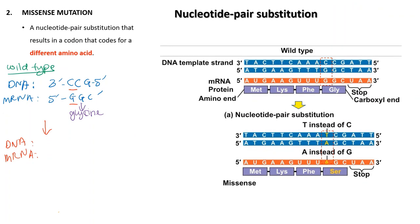For missense mutation, it involves a nucleotide pair substitution that results in a codon that codes for a different amino acid. For example, the DNA template strand of the wild type reads 3' CCG 5', which produces an mRNA codon of 5' GGC 3' during transcription, coding for the amino acid glycine during translation.